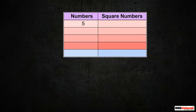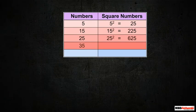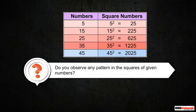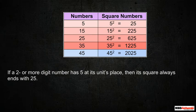Let us see the numbers having 5 at their unit's place and their squares. Do you observe any pattern in squares of given numbers? If a 2 or more digit number has 5 at its unit's place, then its square always ends with 25.